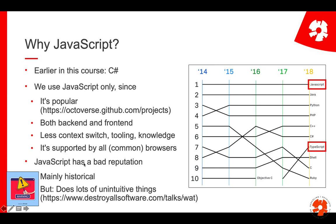JavaScript is supported by all common browsers, so it's a standard language. However, JavaScript has a bad reputation originally — mainly historical, as in the beginning it did a lot of strange things. Another reason for the bad reputation is that it does things that are unintuitive. The WAT talk is a rather famous internet sensation about what weird things JavaScript does, particularly around type conversion. Part of the role in this course is to explain what kind of things are happening in JavaScript and why.